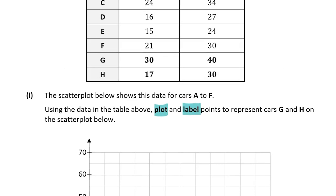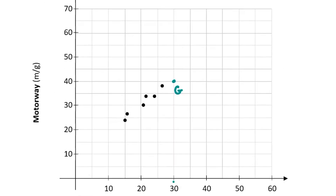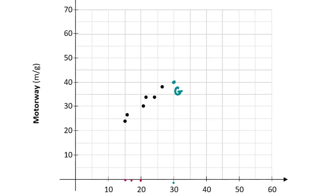For point H, the city value is 17 and the motorway is 30. I'm going to plot this in pink. Since 15 and 20 are marked, 17 is going to be around there. So 17 in the city, then go vertically up to 30 on the motorway and plot your point — and that there is H.